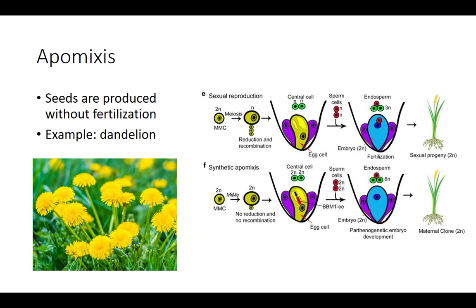A variety of types of asexual propagation can be used. Apomyxis is a form of asexual propagation in which seeds are produced without fertilization — there is no fusion of the male and female gametes, so these seeds are solely maternal in origin. An excellent example is the common dandelion found in most lawns, which is capable of reproducing by seeds, vegetatively, or by apomyxis.